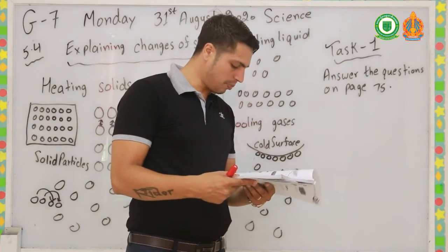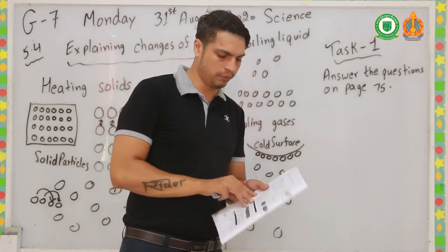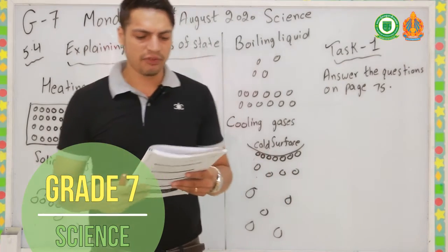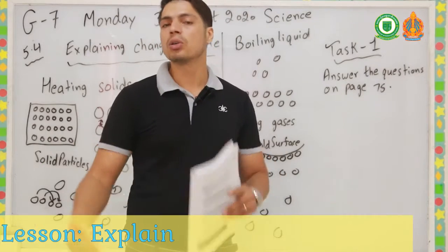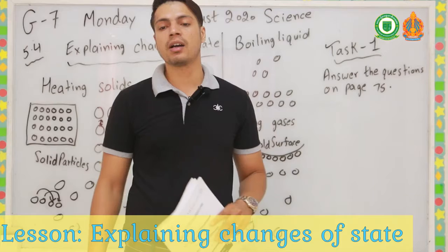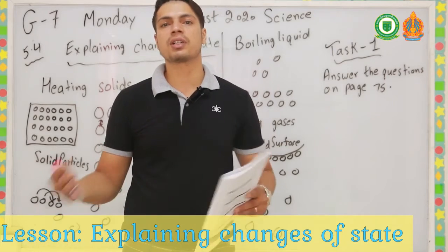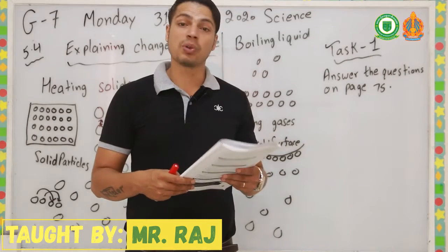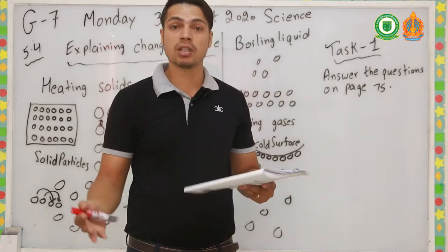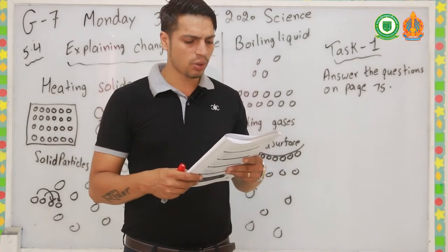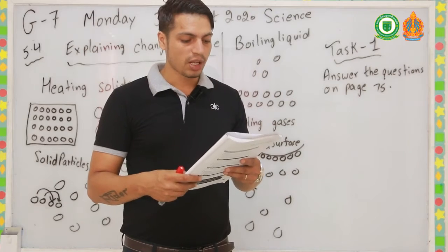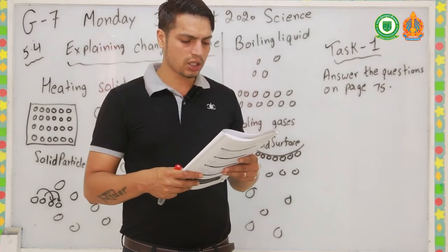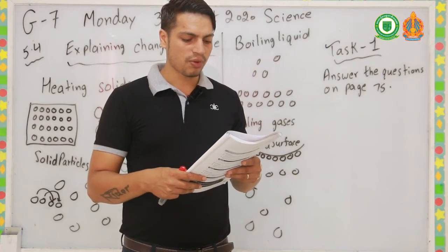Page number 76: cooling gases. The particles in a gas are free to move anywhere and spread out — they have no attractive forces and are very far from each other. When a gas gets cooler, it condenses to form a liquid. When gas particles reach a cold surface, some of the heat energy transfers from the particles to the surface.